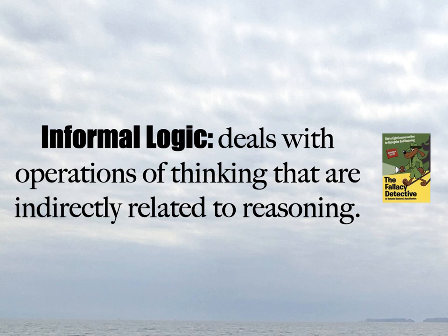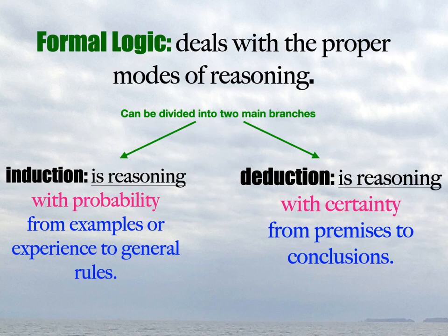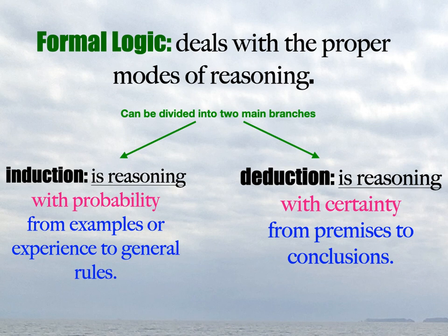Informal logic deals with operations of thinking that are indirectly related to reasoning. Formal logic deals with proper modes of reasoning, and can be further divided into two main branches: induction and deduction. Induction is reasoning with probability from examples or experience to general rules. Deduction is reasoning with certainty from premises to conclusions. That's the introduction.